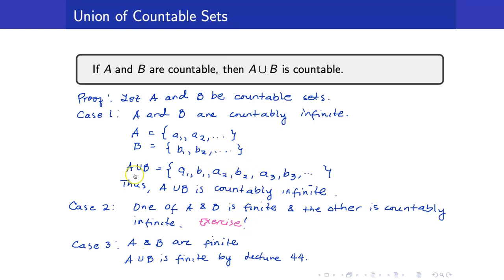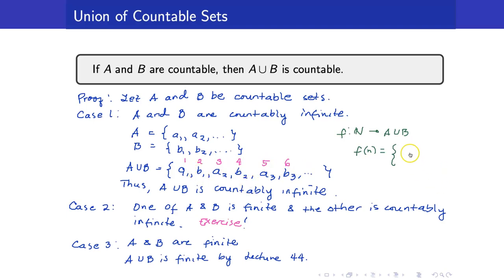Strictly speaking, we can also create a bijection from A ∪ B to N. When we are counting — meaning setting up the bijection — this is 1, 2, 3, 4, 5, 6, and so on. So the bijection F from N to A ∪ B is defined as: F(n) = B_k if n = 2k for some k, and F(n) = A_k if n = 2k + 1. That is the formal bijection.